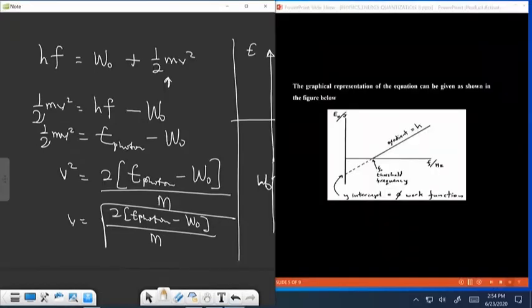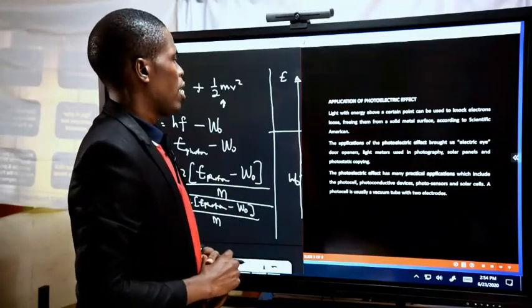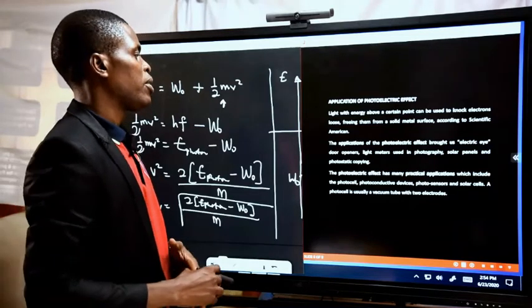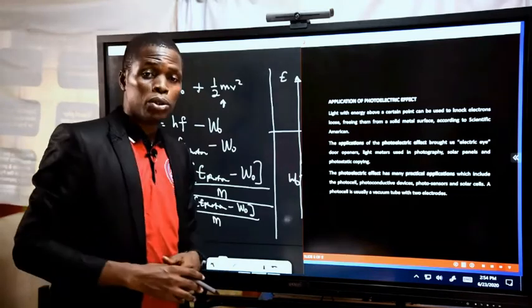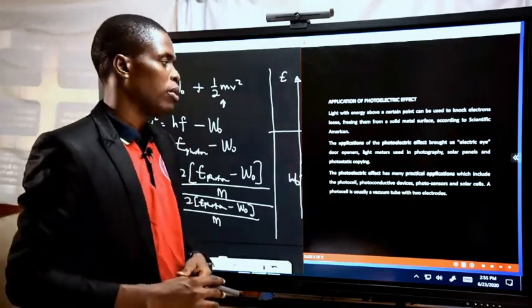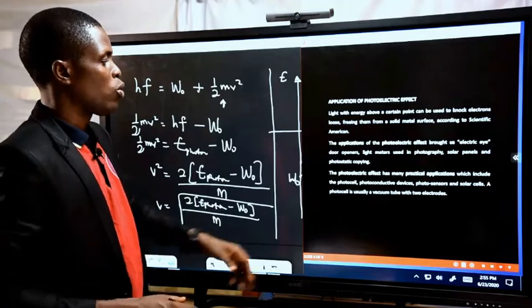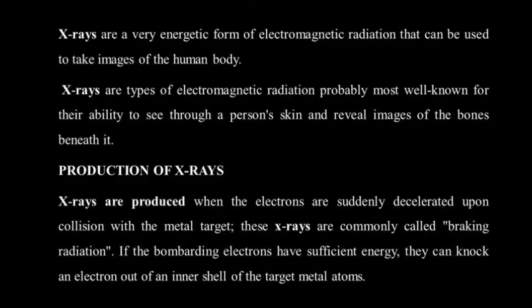We consider the applications of the photoelectric effect. Light with energy above a starting point can be used to knock electrons and free them from a solid metal surface. The application of the photoelectric effect brought us what we call the electric eye, door openers, light meters used in photography, solar panels, and photostatic copying. The photoelectric effect has many practical applications which include the photocell, photoconductive devices, photosensors, and solar cells. A photocell is usually a vacuum tube with two electrodes.